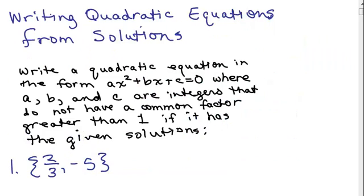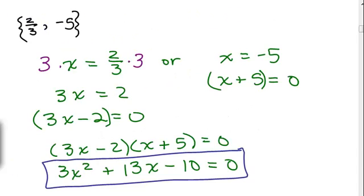We began writing quadratic equations from solutions with this first problem. We know that 2/3 and -5 is a solution. Just a little review. If x was 2/3, we wrote x = 2/3.